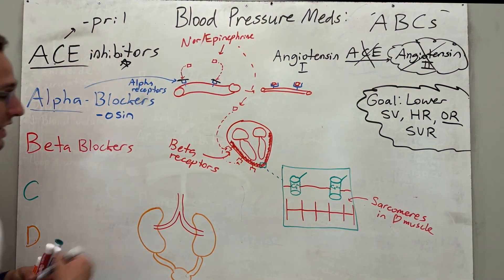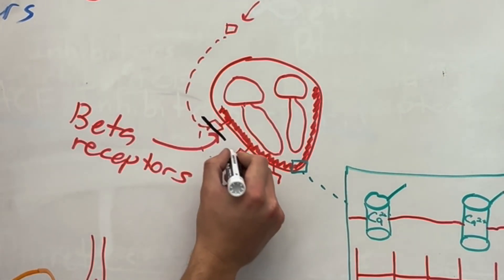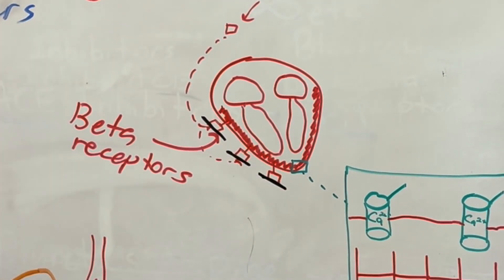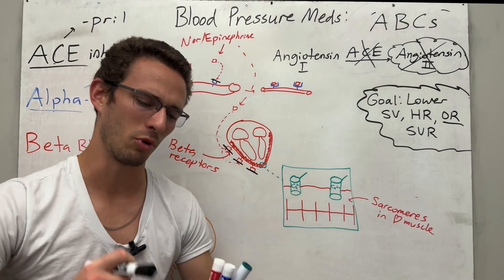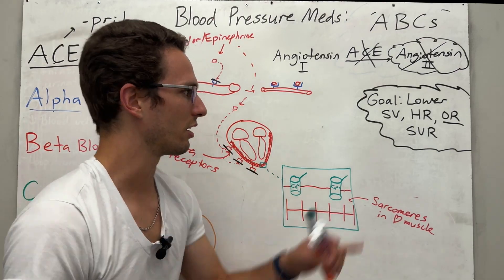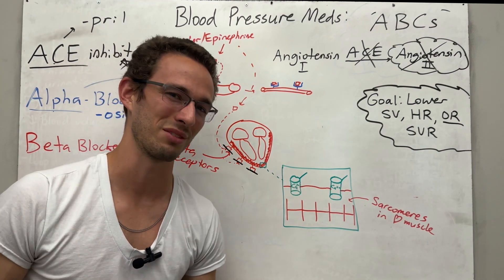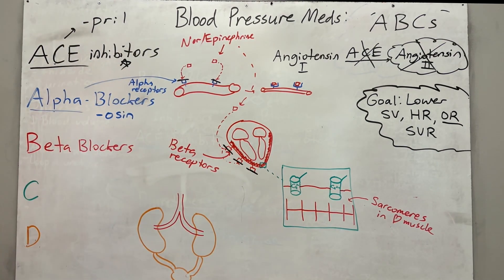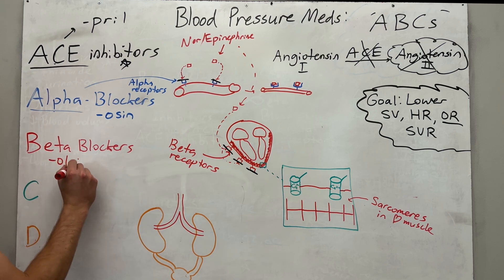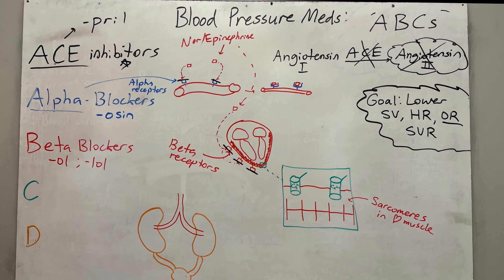So what do they do? Well, these medications will once again, come in, block those beta receptors, preventing that reaction of strong contractions. And therefore the heart will kind of relax a little more. It won't have as strong of contractions, therefore decreasing stroke volume, therefore decreasing blood pressure. Wonderful. Beta blockers, these suckers will usually end in ol or lol. So like metoprolol is one of them. Awesome. So beta blockers, great one.